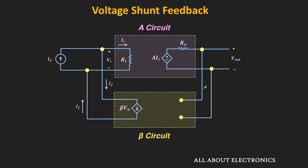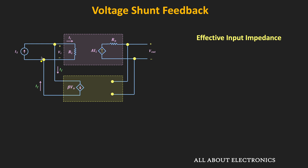That means after connecting the feedback network, the output of the basic amplifier will not change. Specifically, if we remove the mixing side connection, then just because of the voltage sampling, the output of the basic amplifier is not changing. With this consideration, let us find the effective input impedance of this voltage-shunt feedback amplifier. The effective input impedance is the impedance seen through this current source — that is, the ratio of the voltage across the current source to the source current Is, which equals Vi divided by Is. Let's call that Rif.